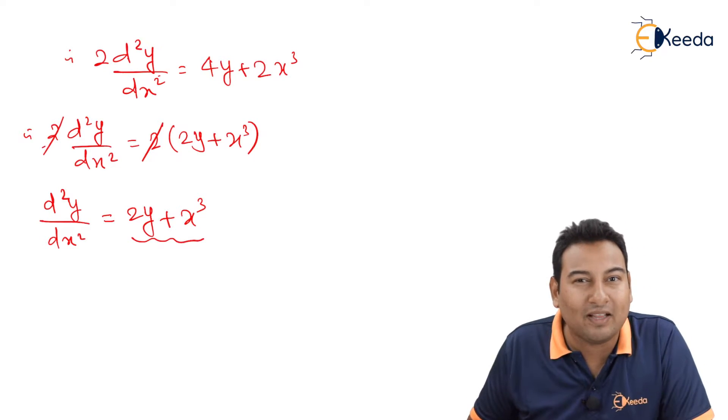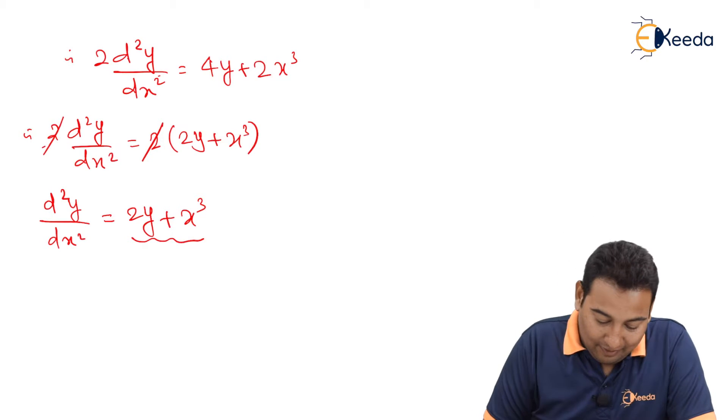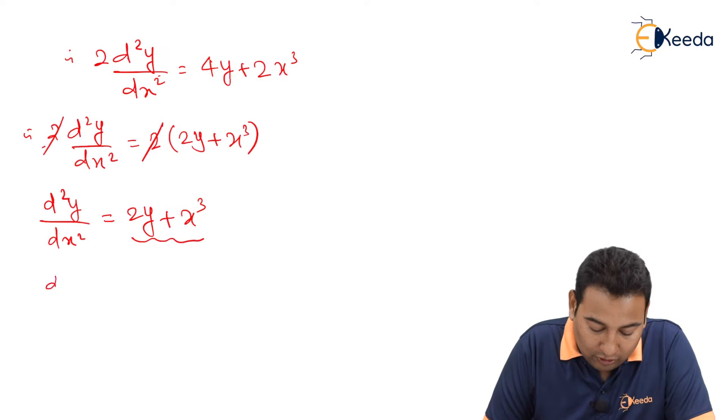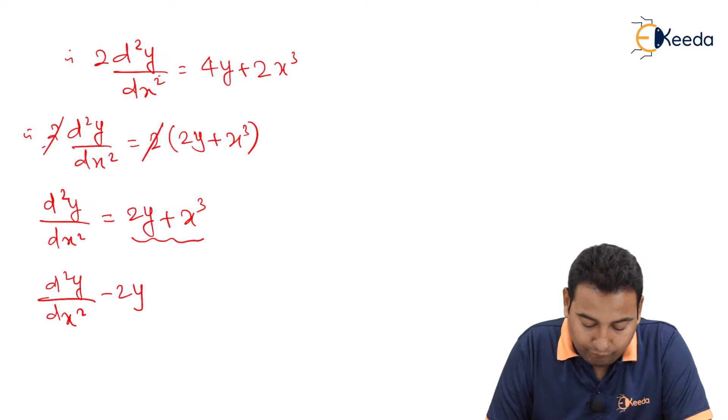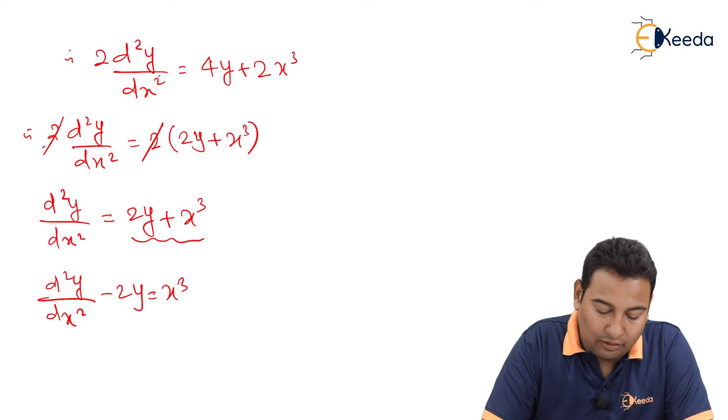The same problem here, it is x and y both, therefore which method? CF plus PI. For that purpose we need to find auxiliary equation first. Y this side and x cube.